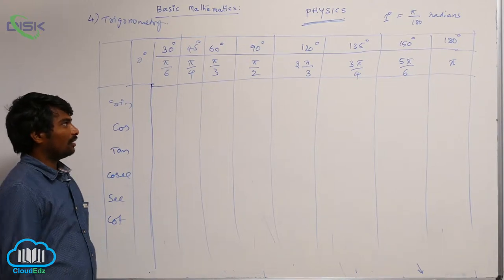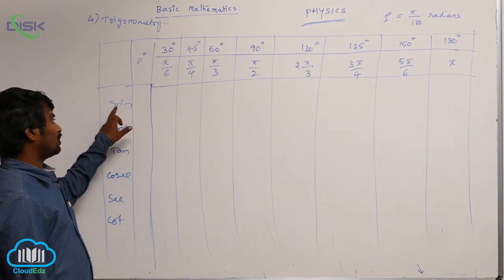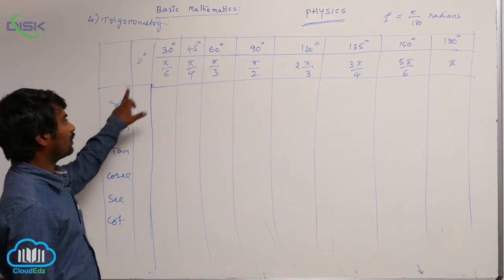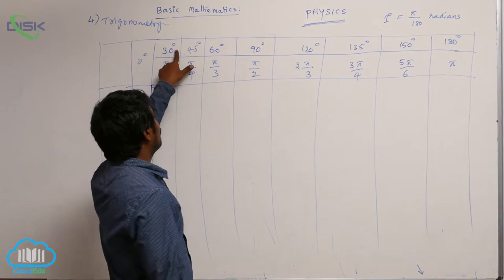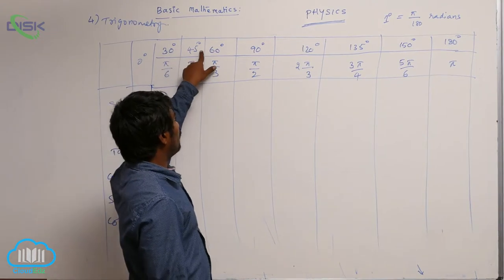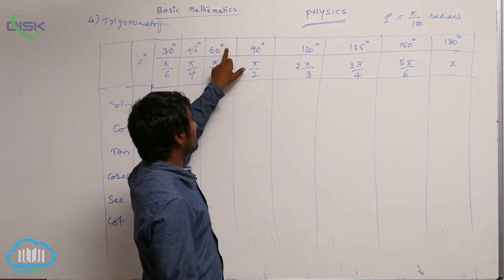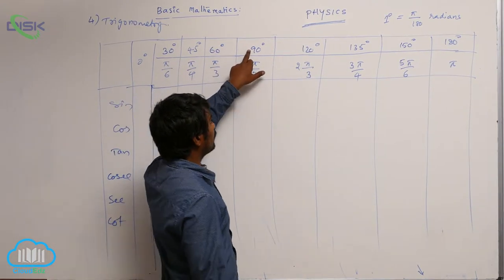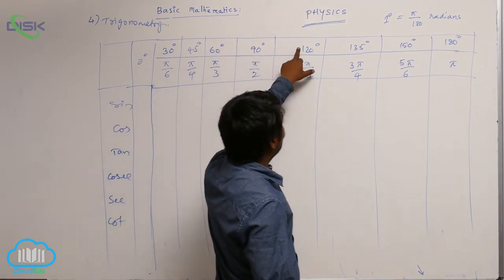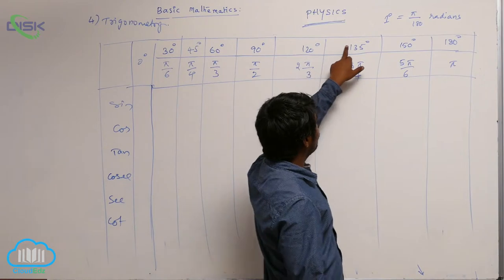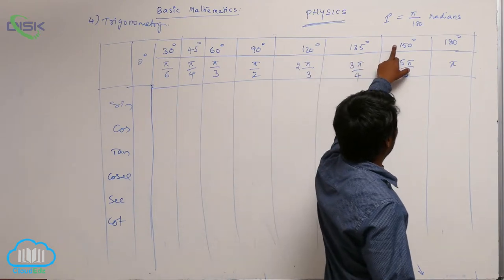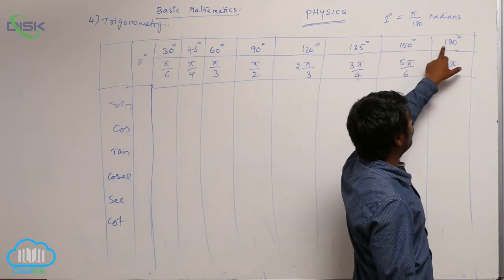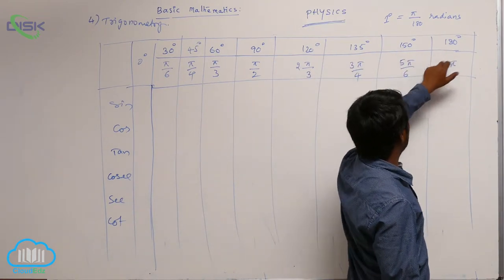Let us calculate the trigonometric ratios for these angles: 30 degrees, 45 degrees, 60 degrees, 90 degrees, 120 degrees, 135 degrees, 150 degrees and 180 degrees.